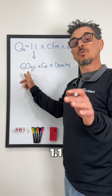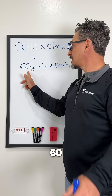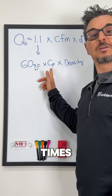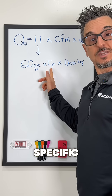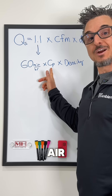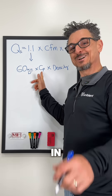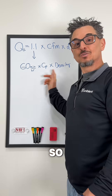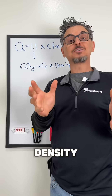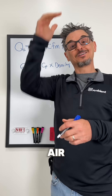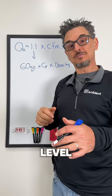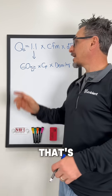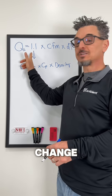The 1.1 breaks down as 60 minutes per hour times the specific heat of air — we'll get into that in another video — times the density of air. What do you know about the density of air up in the mountains versus at sea level? It's a lot lower, so that's obviously going to change this number.